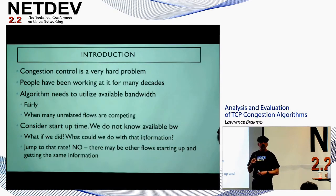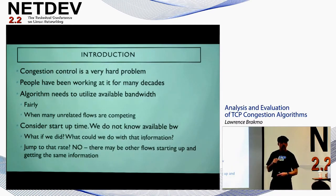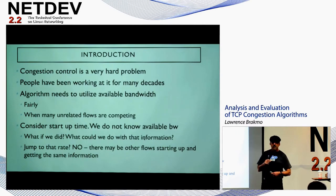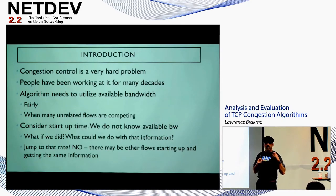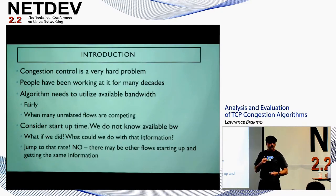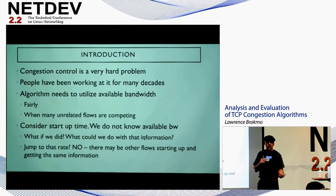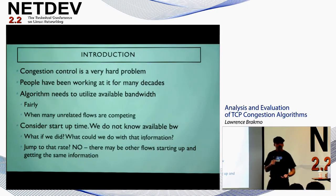Consider when a flow is starting up — you have no idea of the available bandwidth and have to figure out a way to use it. Even if the flow could somehow know how much available bandwidth there is, you might think you'd just use rate control and use all of it. But the problem is that there could be two, five, or ten flows starting at the same time, all getting the same information — and you do not know how many there are. So even if you knew how much bandwidth there is, it would still be a hard problem to use it quickly.